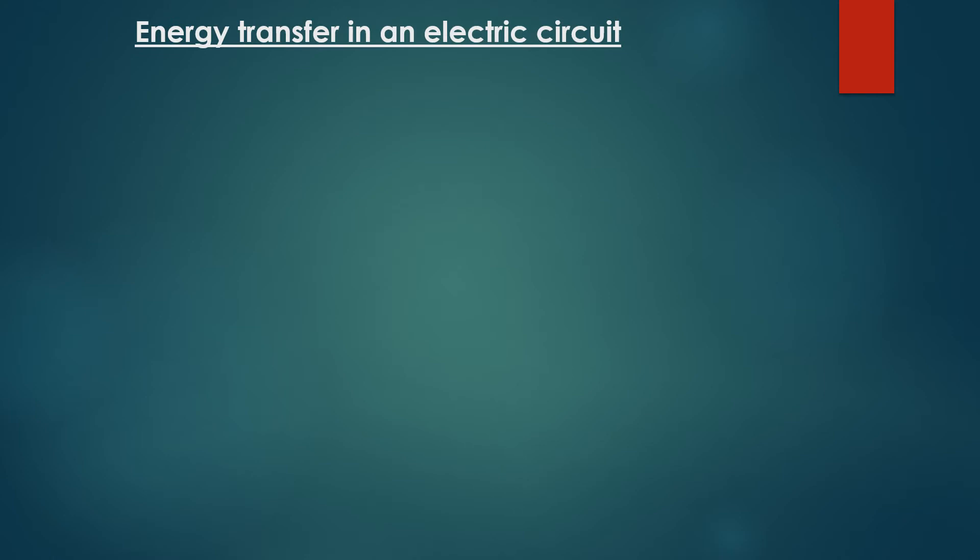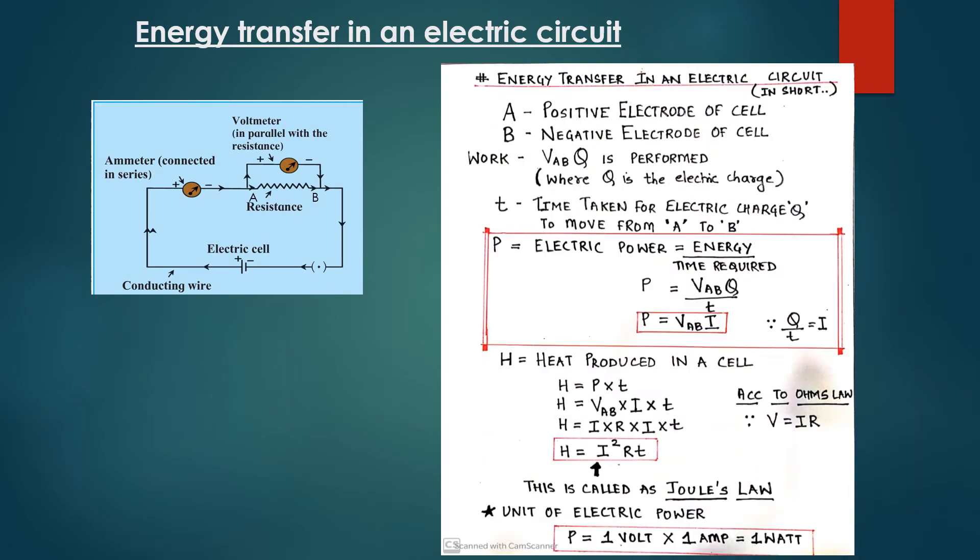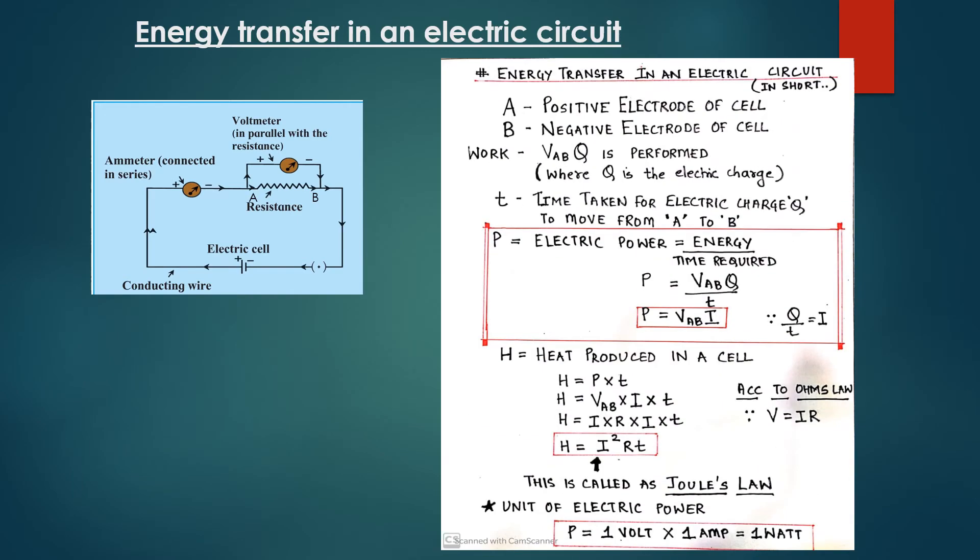Energy Transfer in an Electric Circuit in short. As you can see in the figure, A is a positive electrode of the cell, B is a negative electrode of the cell, and work to be performed is VABQ, where Q is the electric charge.